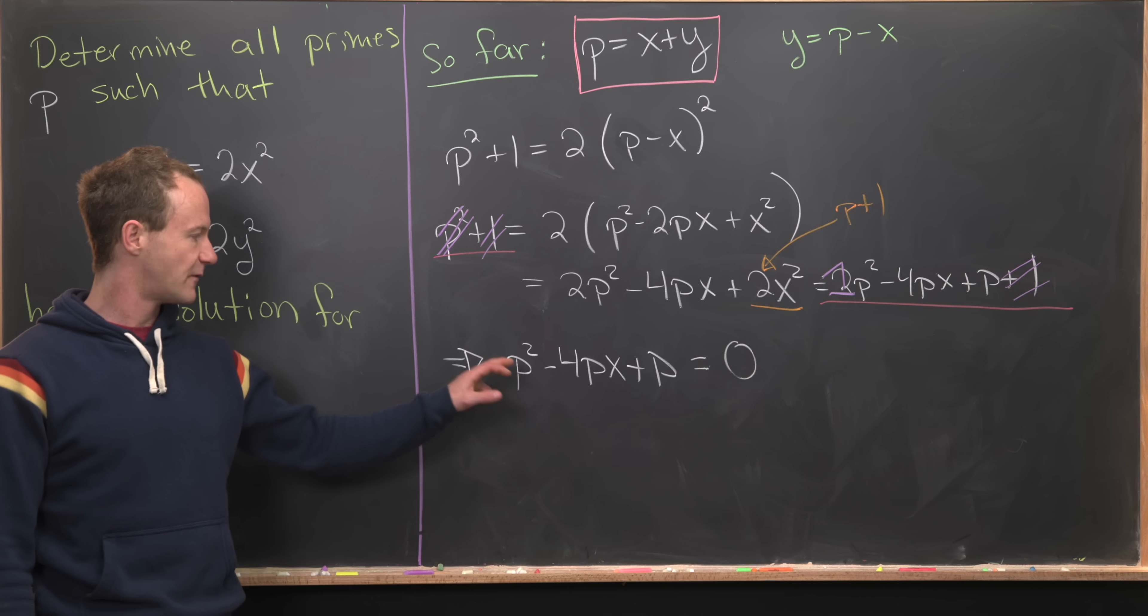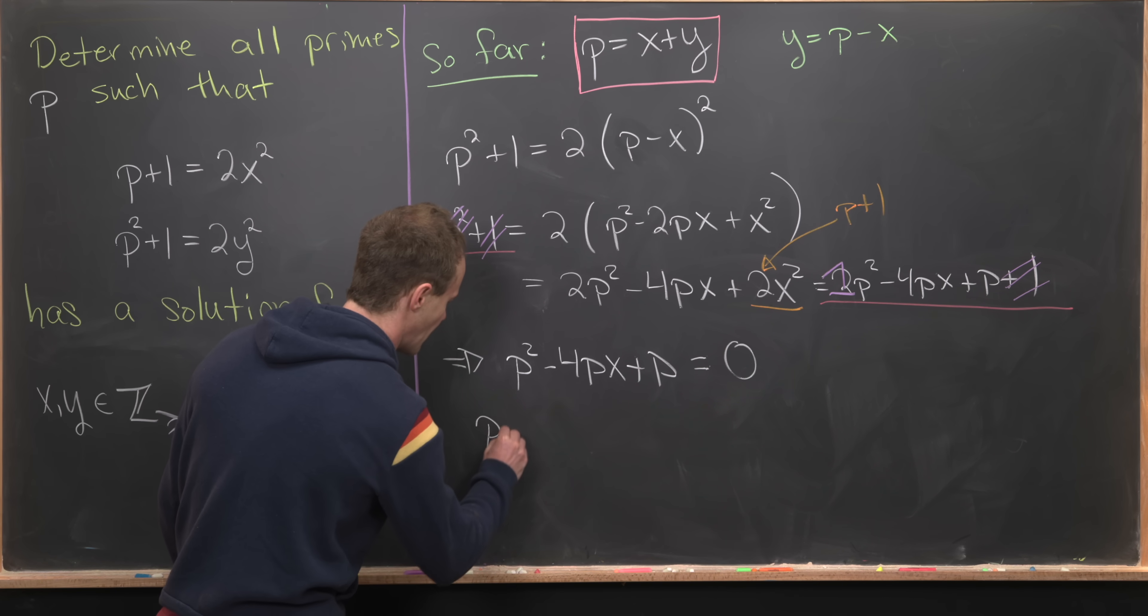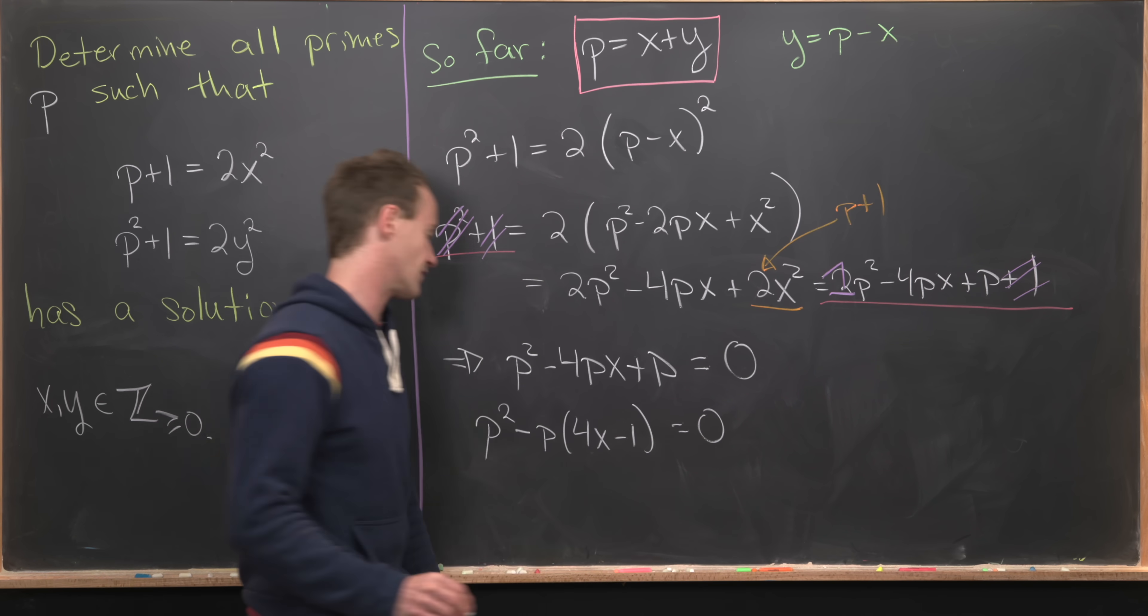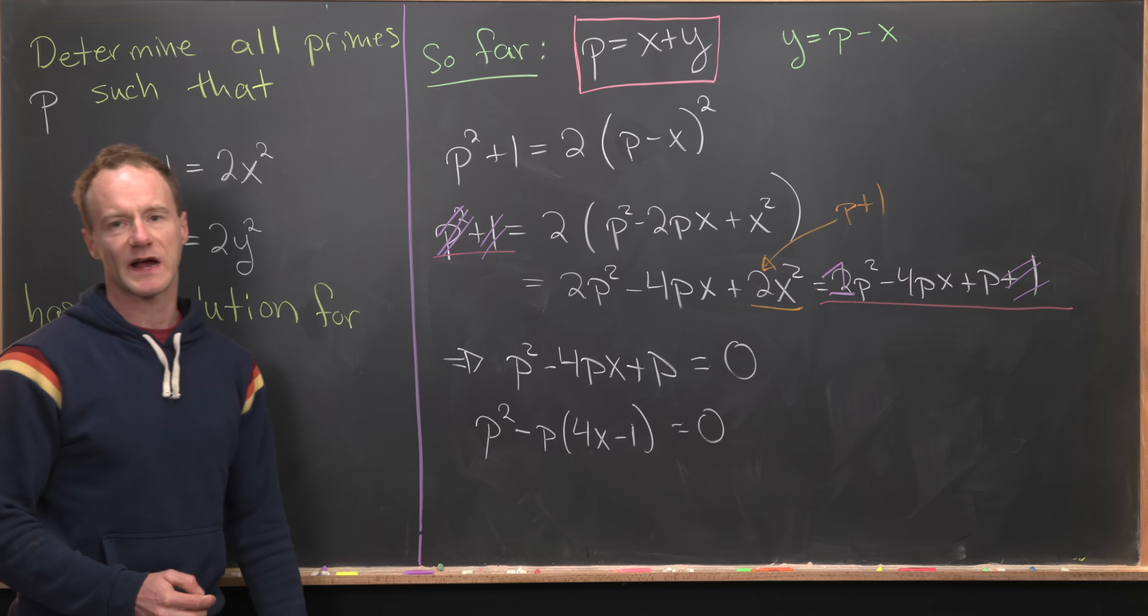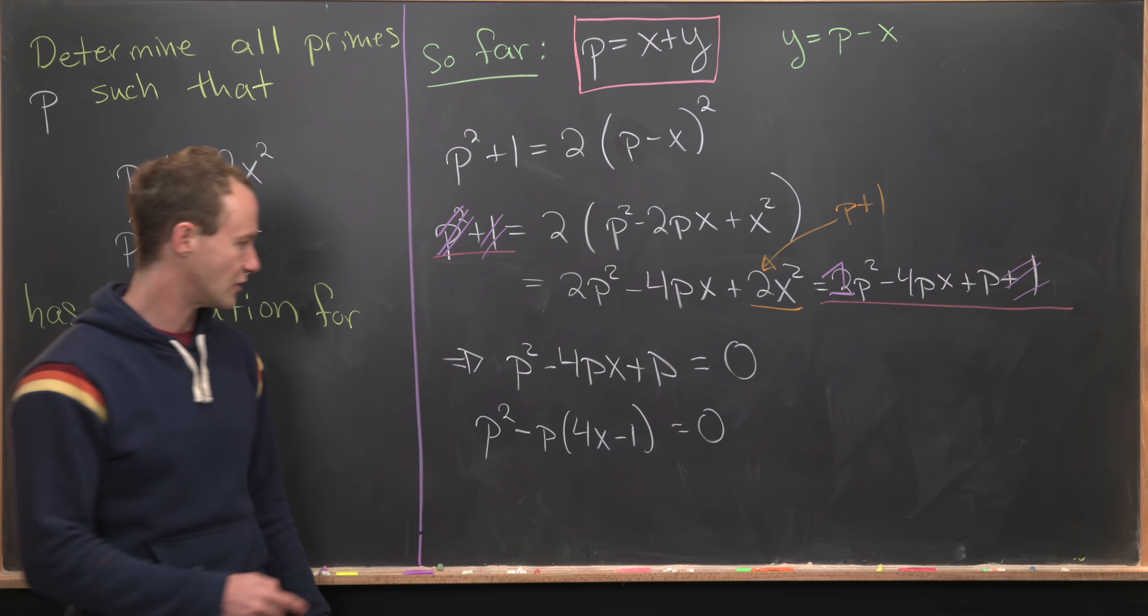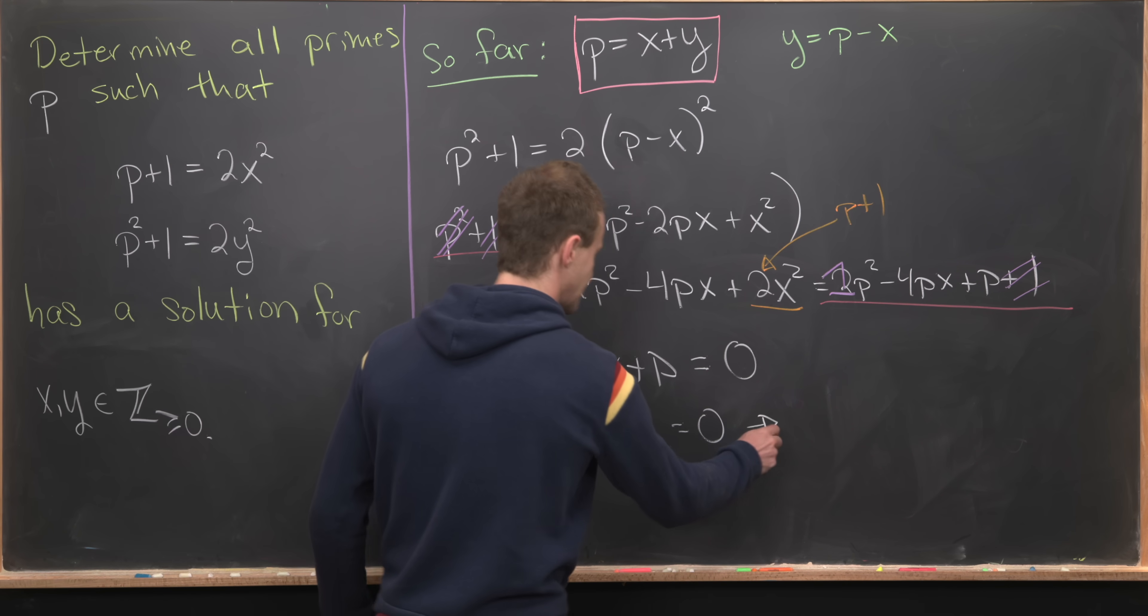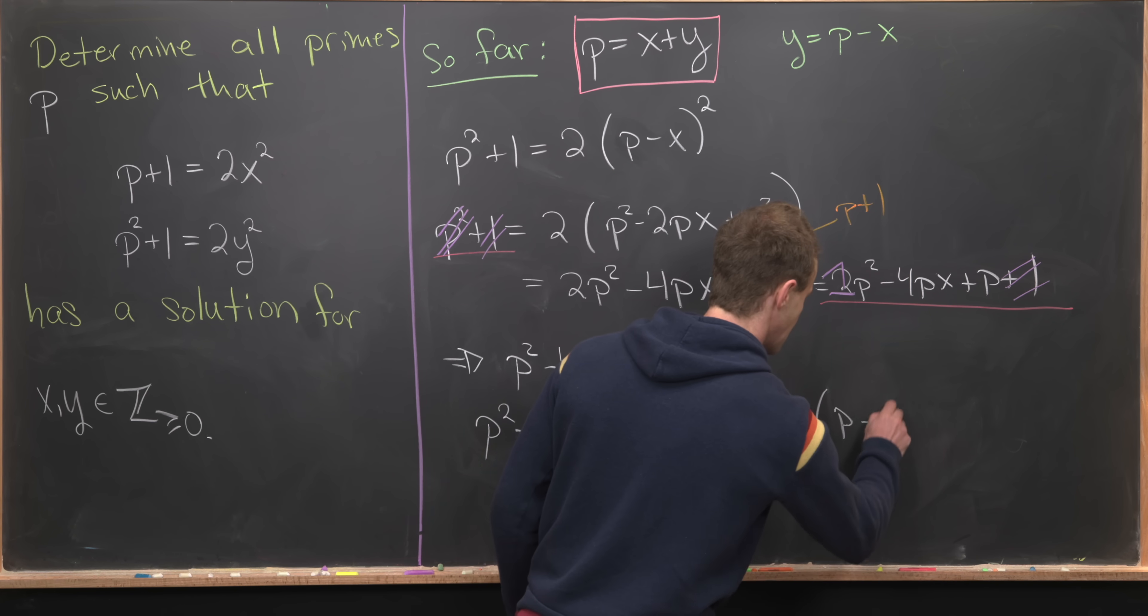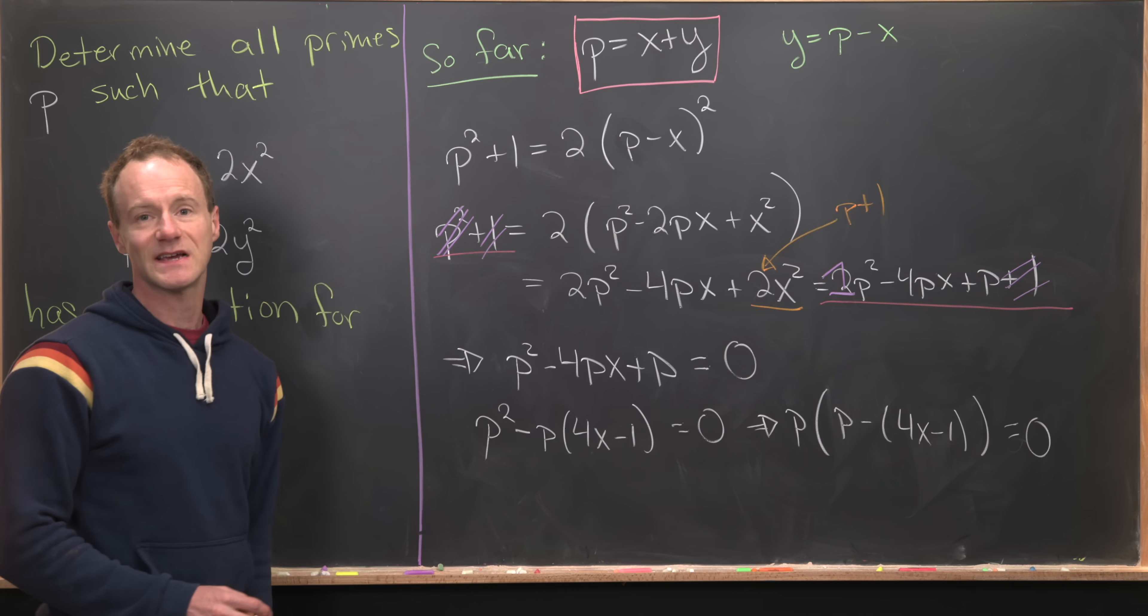This is quadratic in p, so it would be more helpful to write it as p² minus p(4x−1) equals 0, where we think of 4x−1 as a coefficient. Doing some factoring, we see this is p times (p−4x+1) equals 0.